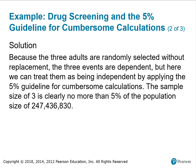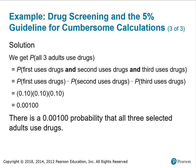The sample size of three is clearly no more than 5% of the population size of 247 million. So we get the probability that all three adults use drugs equal to the probability that the first uses drugs, the second uses drugs, and the third uses drugs. We find those three probabilities and multiply them together: 0.10 × 0.10 × 0.10, giving us 0.00100 as the probability that all three selected adults use drugs.